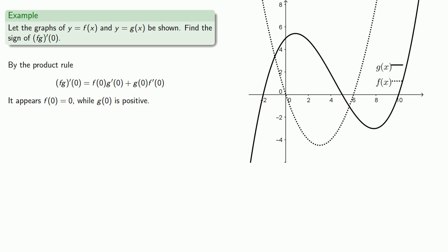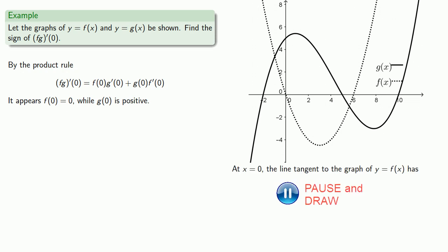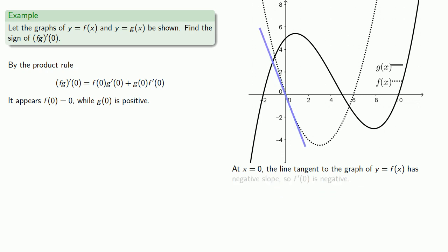f prime of 0 is going to be the slope of the line tangent to the graph of y equals f of x at the point where x equals 0. So we might imagine what that tangent line looks like, and it appears that that tangent line will slope downwards, so f prime of 0 is going to be negative.